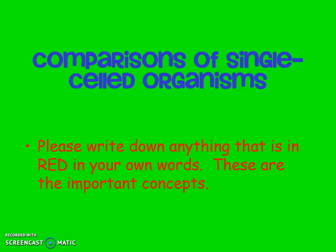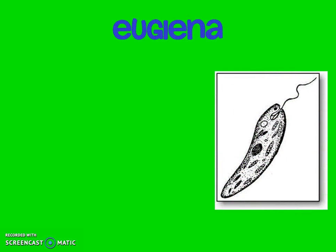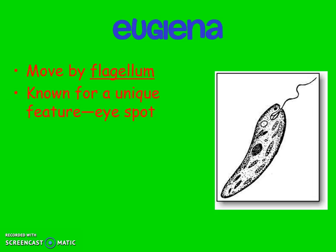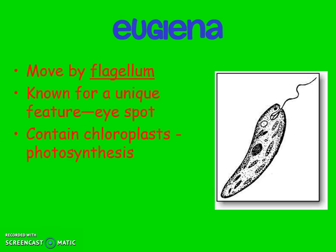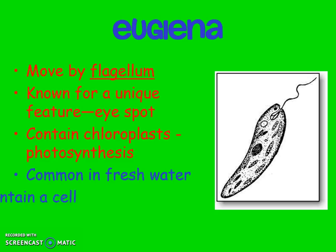We're going to talk about these four single-celled organisms. Write down the words in red because these are very important. The first one is the euglena — this is the one that has the flagellum, so it moves by flagellum, the long tail. The euglena is known for its unique feature: the eye spot. The euglena contains chloroplasts, which is where photosynthesis takes place. However, remember this is not a plant — this is considered a protist. But some protists actually have chloroplasts where they can complete photosynthesis, meaning they can make their own food.